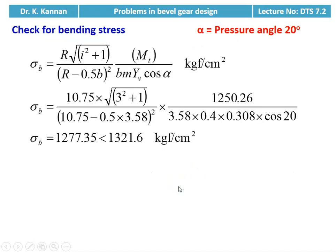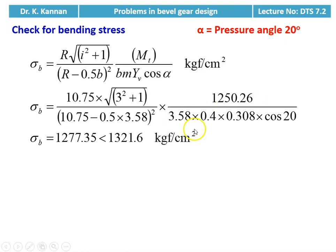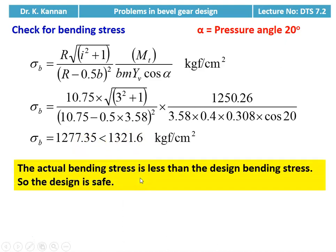We check for bending stress, taking pressure angle α = 20°. σB = [R × √(i² + 1) / (R − 0.5b)²] × MT(design) / (b × m × YV × cos α). Substituting: σB = 10.75 × √(3² + 1) / (10.75 − 0.5 × 3.58)² × 1250.26 / (3.58 × 0.4 × 0.308 × cos 20°) = 1277.35 kgf/cm², which is lower than the design bending stress of 1321.6 kgf/cm². The actual bending stress is less than the design bending stress, so the design is safe.